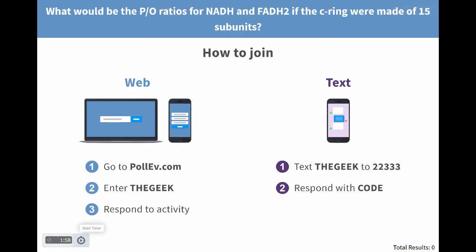Let's see if you followed that. You need two minutes to solve this problem with your neighbor: what would be the P/O ratios for NADH and FADH2 if the C ring were made of 15 subunits? Report your answer as number of ATP per NADH and FADH2.